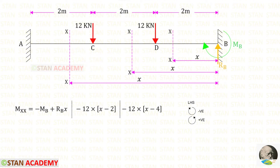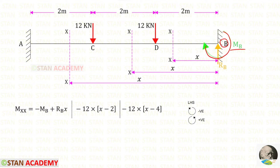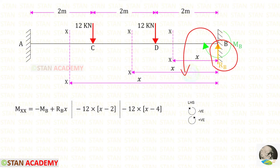Now let us find the moment about the sections. We are going to find the moments from point B. In this case we have to follow the left-hand side rule: clockwise will be negative and anti-clockwise will be positive. At point B we have MB which is acting in the clockwise direction, so it will be negative. RB is acting in the anti-clockwise direction so it will be positive, and the distance is X.